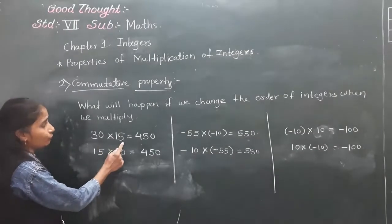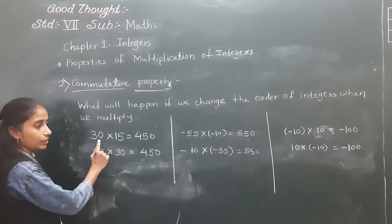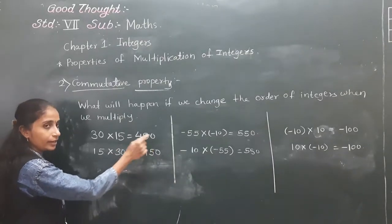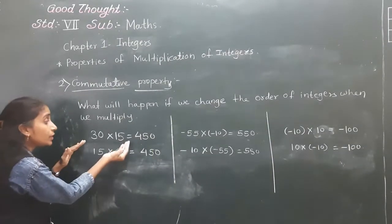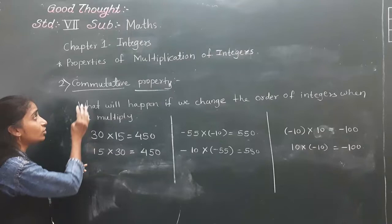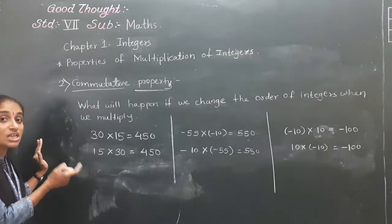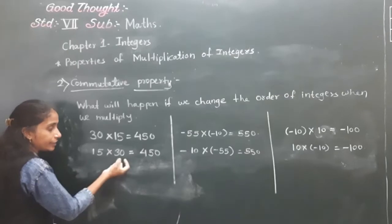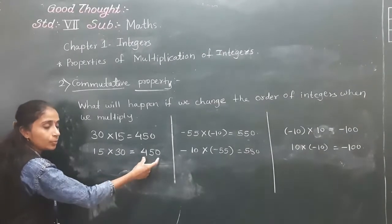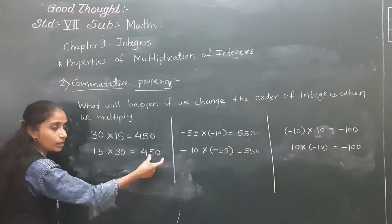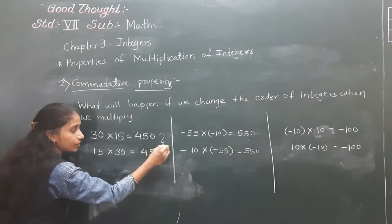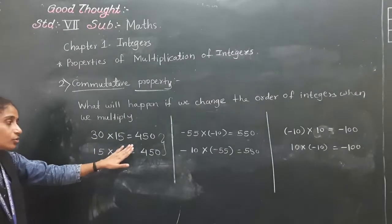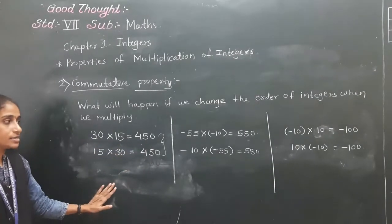30 into 50 — the answer is 1500. But in commutative property, we change the order: 50 into 30. The product remains same — 1500. Even though we changed the order, the product remains same.